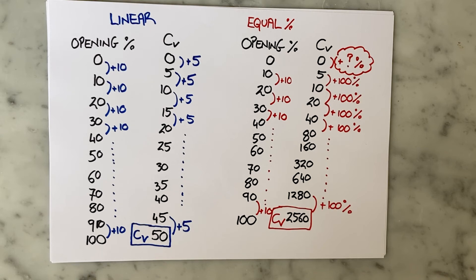So this initial step change is an additional parameter that needs to be defined up front in order for me to fully characterize the equal percentage valve.